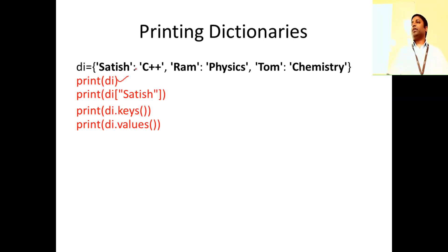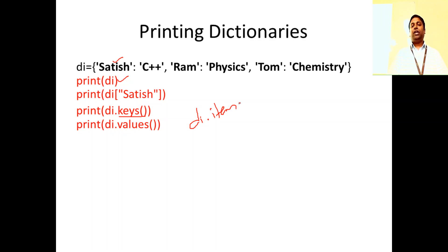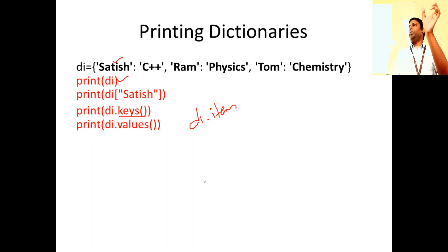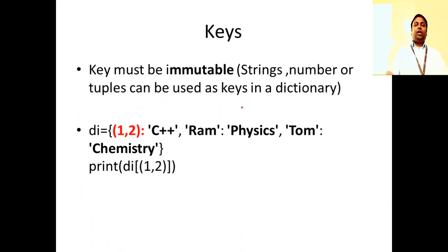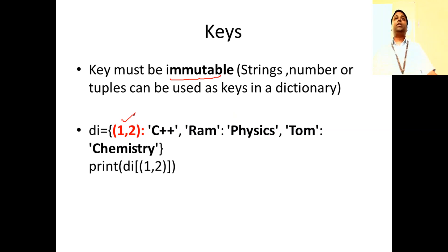To print dictionaries, you use the dictionary name to print all key-value pairs. You can also use the method dot keys to print only the keys, dot values to print only the values. There is also di.items — when you use items, it prints the entire key-value pair, but each pair is printed as a tuple inside a list. Keys must be immutable; a tuple can be a key but a list and a set cannot.